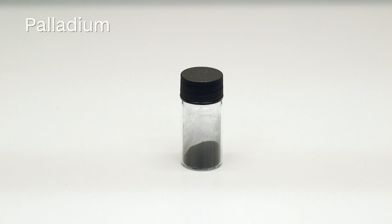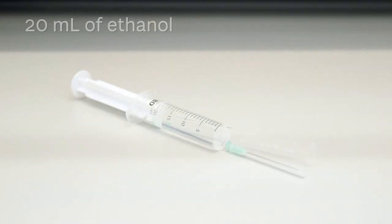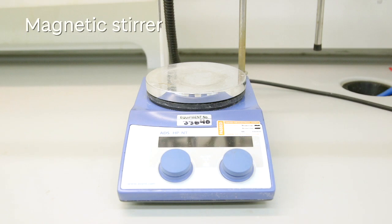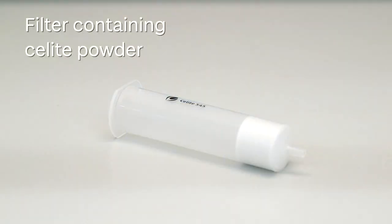You'll also need your palladium, your substrate, 20 ml of ethanol, a magnetic stir bar, a magnetic stirrer, and a filter containing sea light powder.